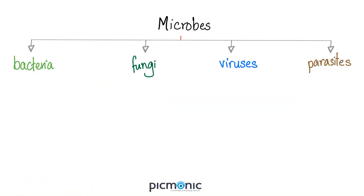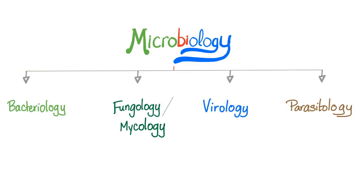We divide organisms into bacteria, fungi, viruses, and parasites. Parasites should arguably be in a separate category because some parasites are so long they can be seen by the naked eye — for example, the Ascaris. There is nothing microscopic about it. And today we'll talk about bacteriology.